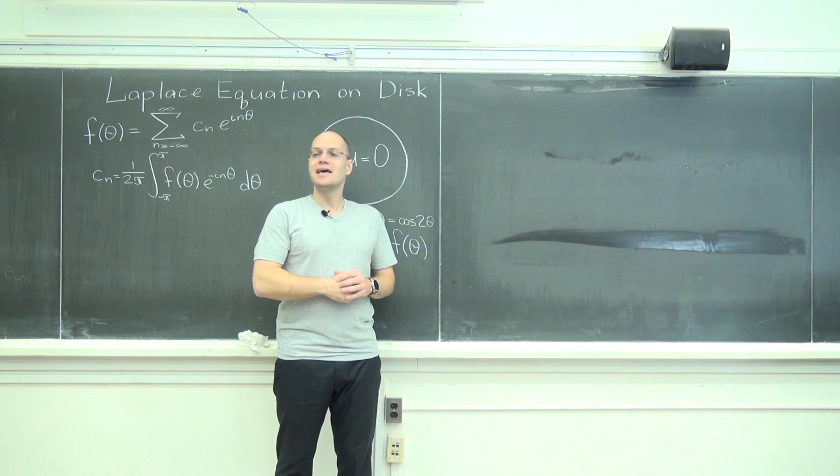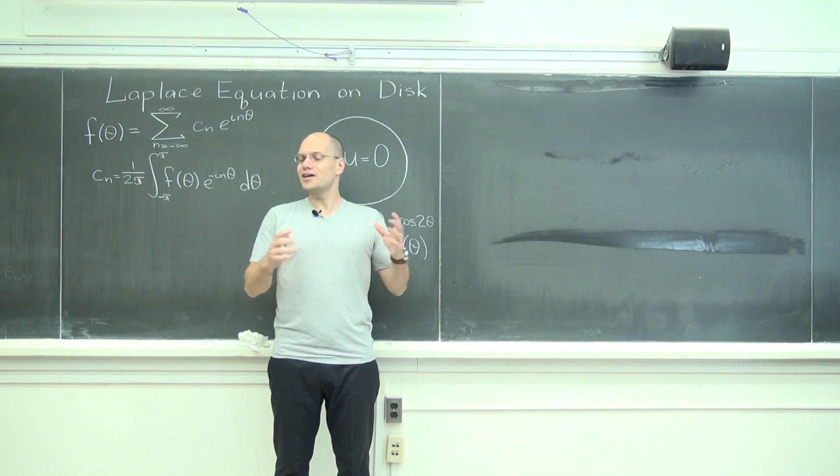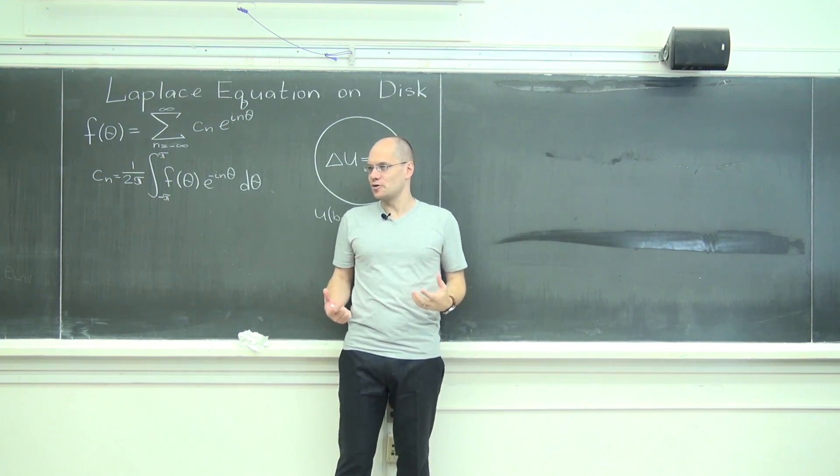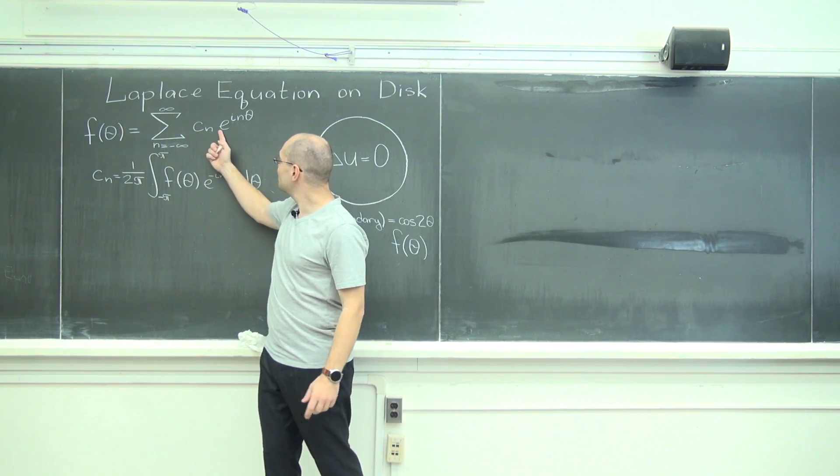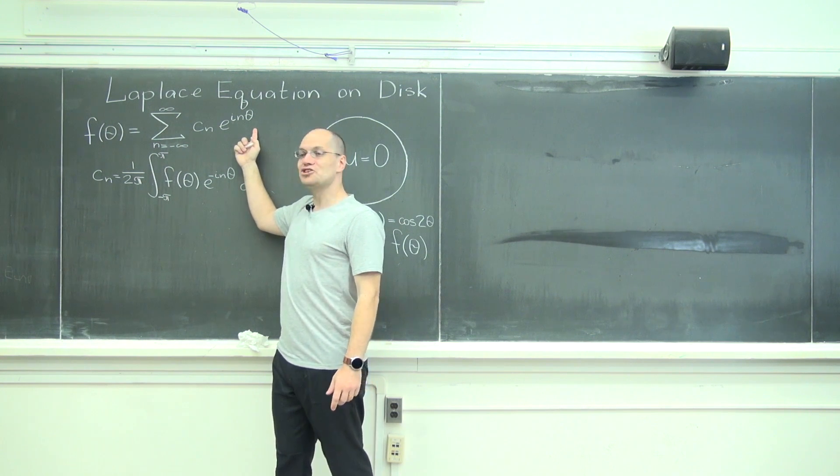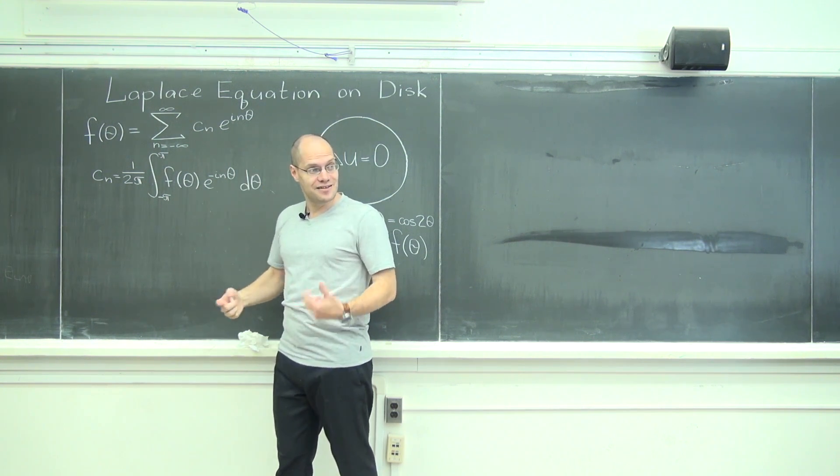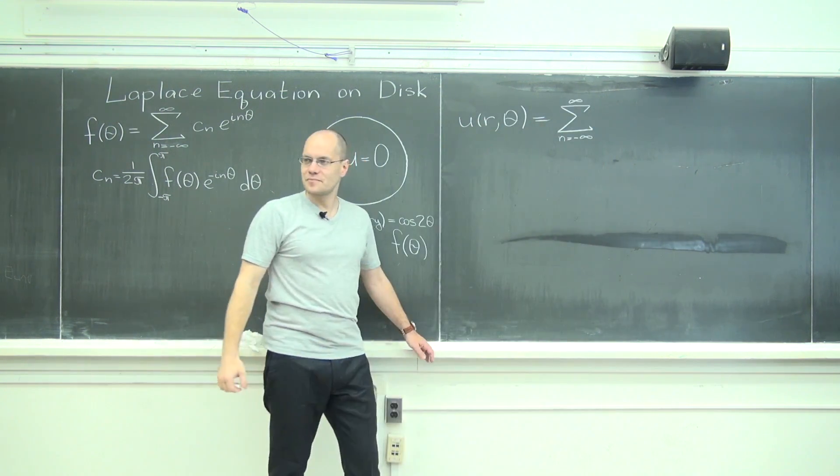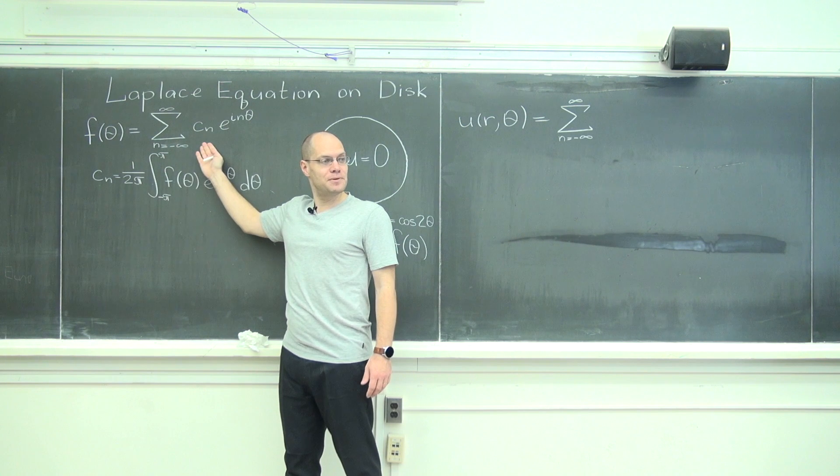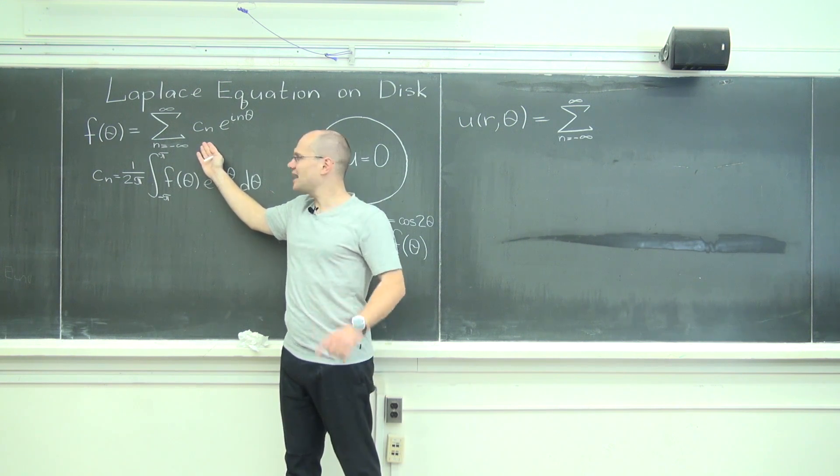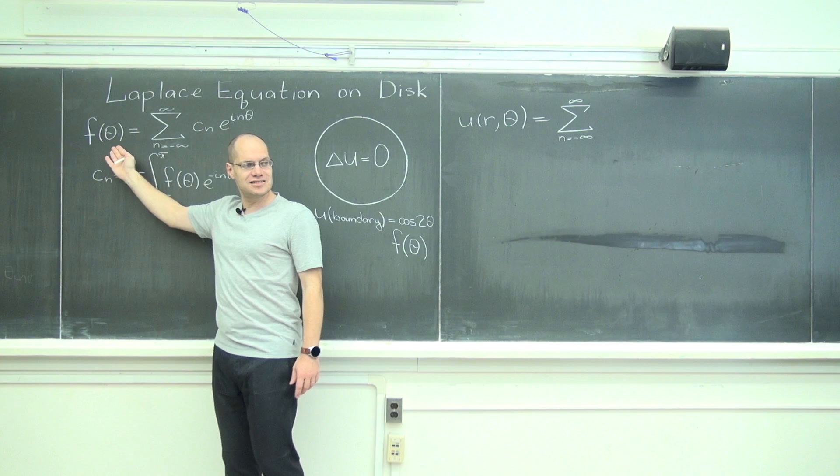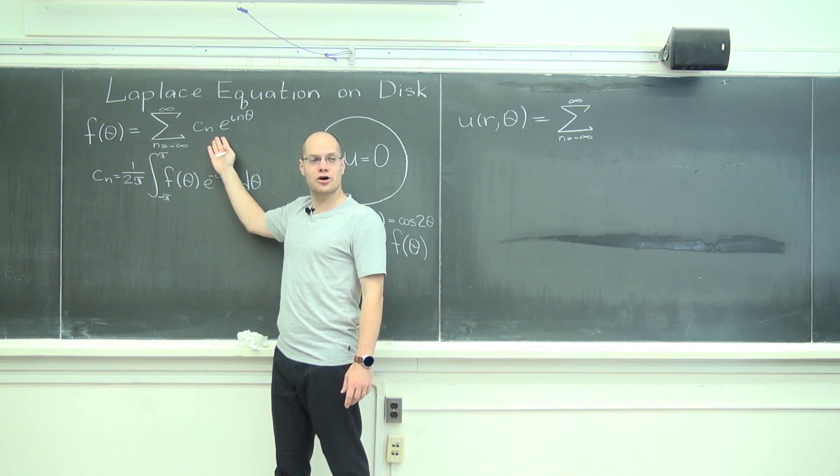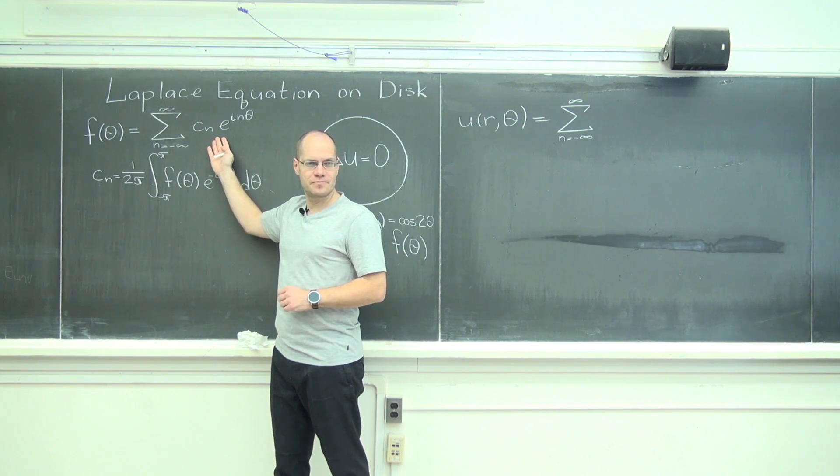First thing we're going to do is rewrite the general solution, this in general infinite sum, in complex terms and take full advantage of this geometric series field. So here's what it will look like. Because we're following the Fourier series, the recipe will be the same, with one little caveat, which is whatever the boundary condition is, decompose it as a Fourier series and then multiply each term by r to the n, almost.